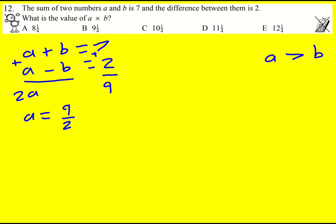So for a I'm going to get 9 over 2 and then for b it's going to be 7 minus 9 over 2 or 14 over 2 minus 9 over 2 which is going to be 5 over 2.